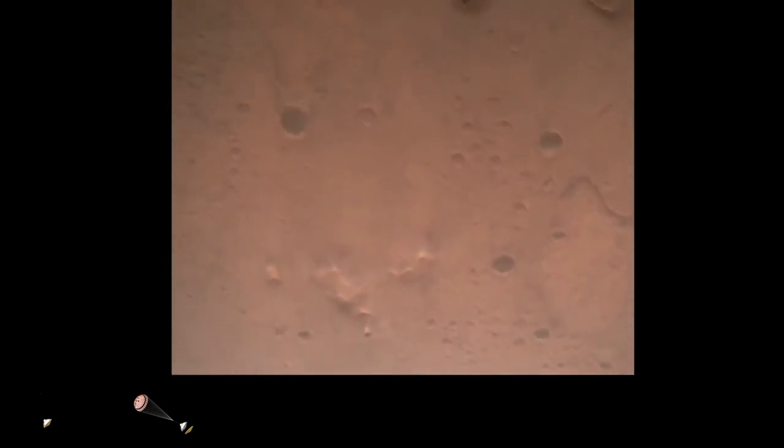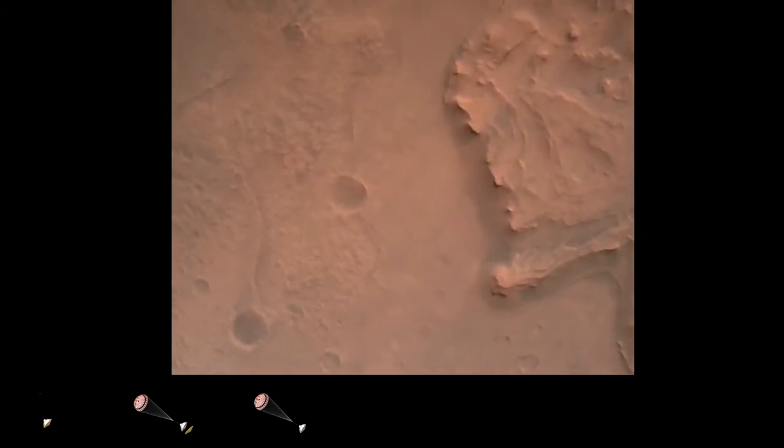Nav filter converged. Velocity solution 3.3 meters per second, altitude 7.4 kilometers. Now has radar lock on the ground. Current velocity is about 100 meters per second, 6.6 kilometers above the surface of Mars.